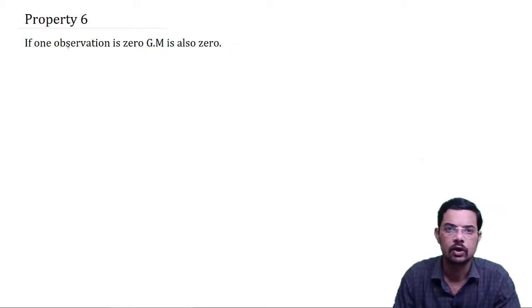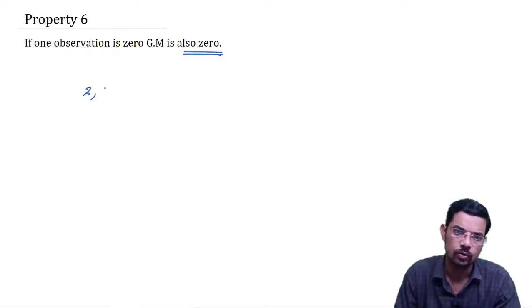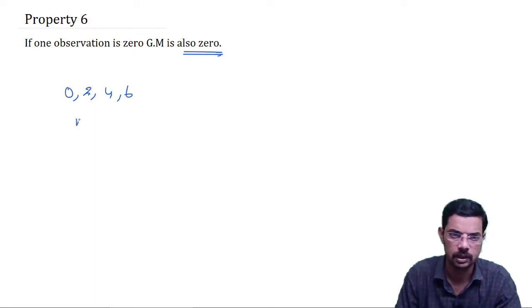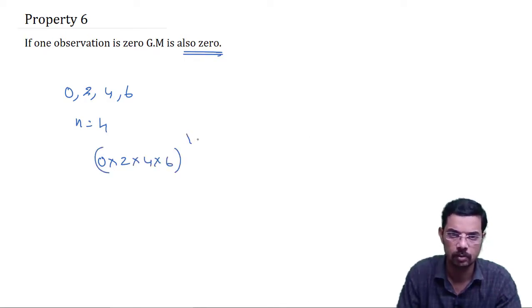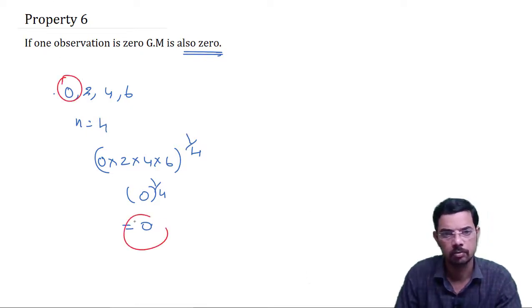Property 6: if one observation is 0, then the geometric mean is also 0. For example, for observations 2, 4, 6 and 0, n equals 4, the GM equals (0 × 2 × 4 × 6) raised to 1 by 4. The product is 0, and 0 raised to 1 by 4 equals 0. Therefore, if any one observation is 0, the geometric mean is also 0.